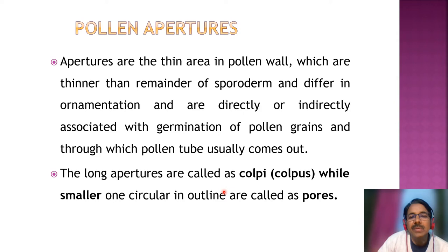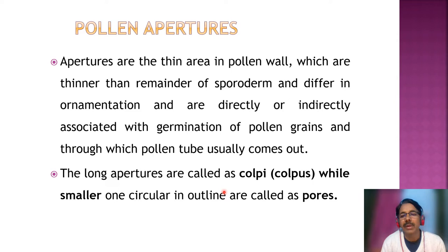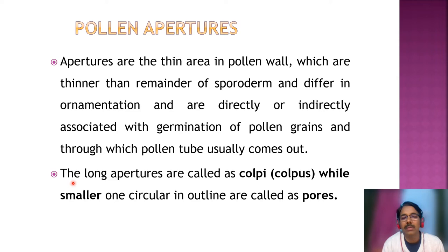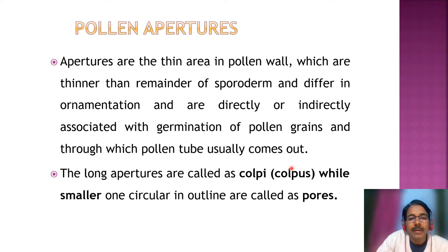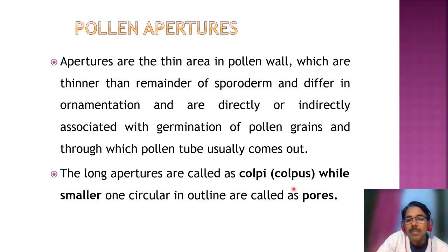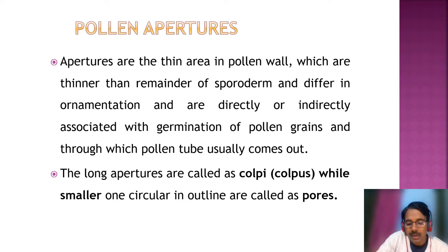Apertures are actually thin areas where the exine part is lacking, and they are associated with germination because the pollen tube comes out from these apertures. The content of the pollen grain comes out through the pollen tube. The apertures are of two broad shape categories: a long aperture called a colpus, while smaller ones circular in outline are called a pore. So the apertures are usually of two types: the long slit-like aperture called colpus or colpa, while smaller ones circular in outline are called pores.